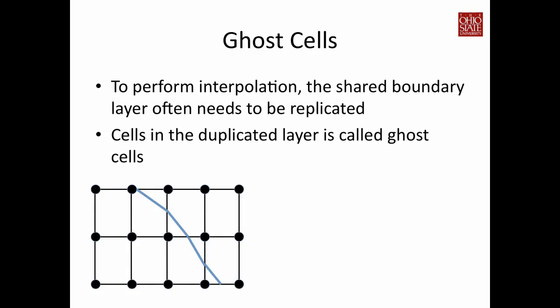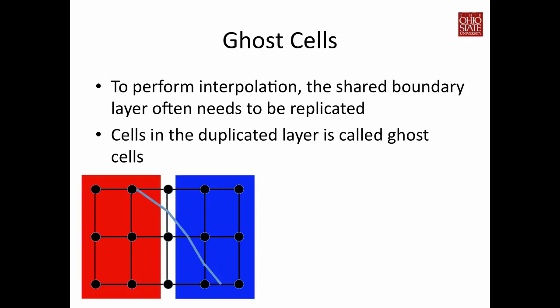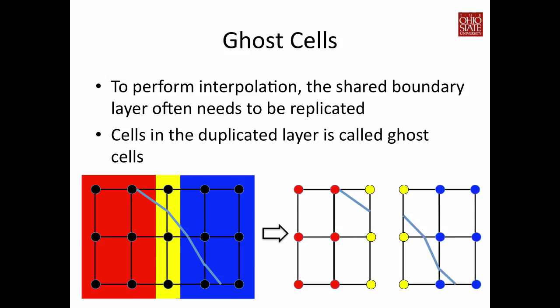When partitioning data, you need to pay attention to ghost cells. In a 5x3 2D mesh running an ISO contouring algorithm, the ISO contour passes through four cells. If you subdivide into two pieces — one processor gets the red region, another gets the blue region — the middle column (yellow portion) must be duplicated and given to both processors. Both processors require that yellow region to perform interpolation; without it, one processor cannot interpolate because it lacks data on one side of the partition. This duplicated layer is called ghost data or ghost cells.